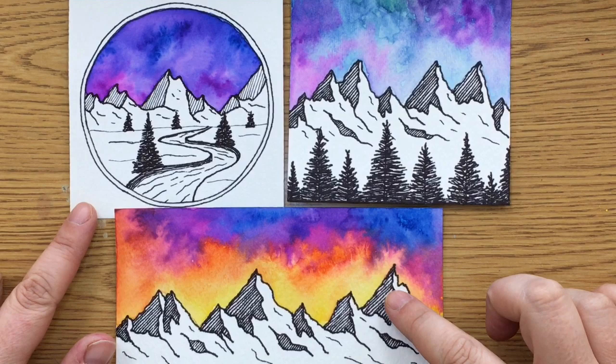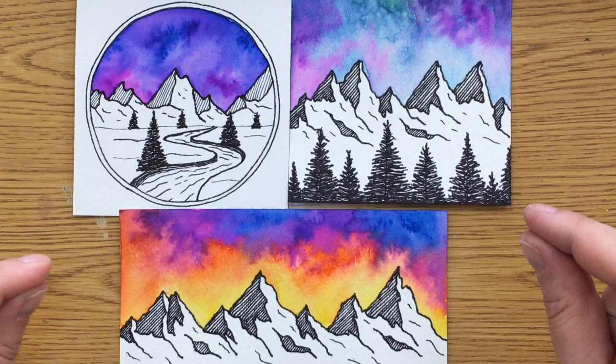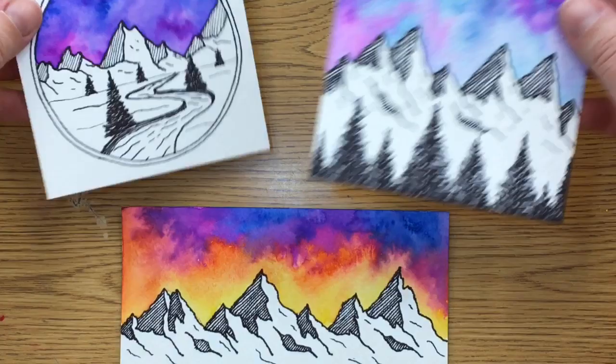So we are actually going to be looking at some other examples by an artist, her name is Jen Arani, and she does all these really beautiful teeny tiny mountain watercolor landscapes. So I'm going to show you how we're going to make ours.